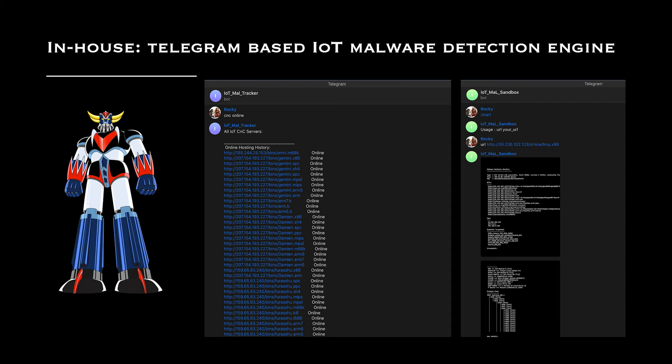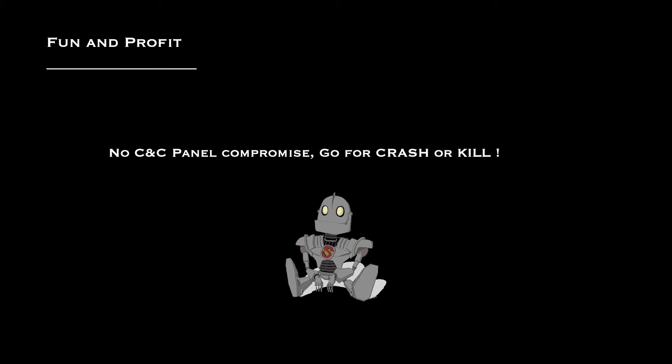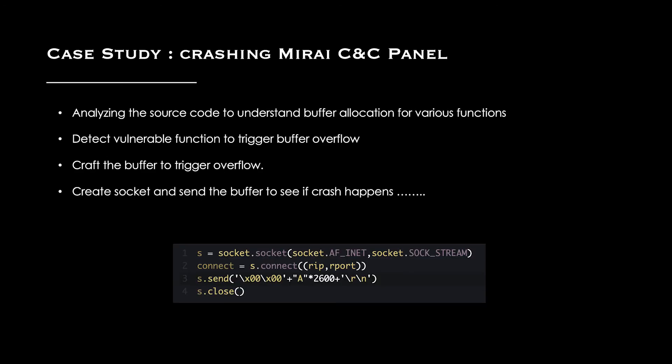Sometimes you can go after compromising C&C panels, and sometimes you're not able to fully compromise the remote server. But there's another approach: crash and kill. The question is whether you can actually crash the remote C&C server. You may not be able to compromise it completely, but you can at least disrupt it. This is based on research where you find a vulnerability or design flaw in IoT bot binaries or in the way IoT C&C panels are deployed.